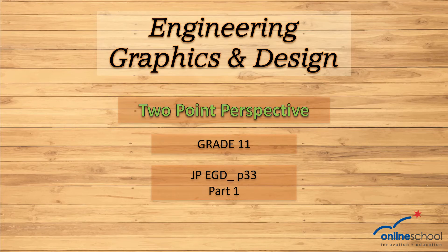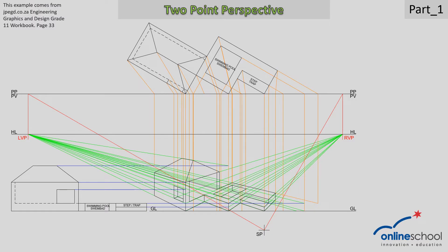Hi everyone, in this session we're going to do page 33 of the JPEGD workbook. This is part one of the three-part series. Here is the answer of our drawing, and this is the goal towards which we are working. If we look at the top view, we will see we have three sections of this structure that we want to draw, and therefore we are dividing this lesson into three parts. We want to attempt each part as we go along, working our way from one to three, and then come back to the pool at number two within the structure.